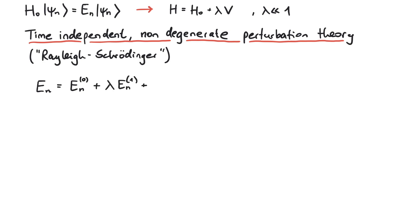The first term is the energy of the unperturbed Hamiltonian. This would be exact if lambda were zero. But for a non-zero lambda, we expect there to be some corrections.